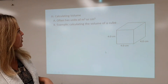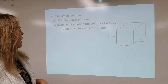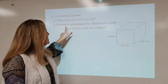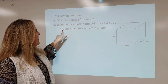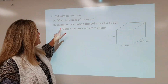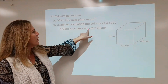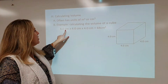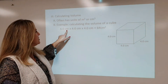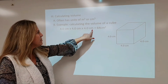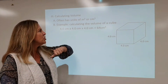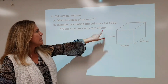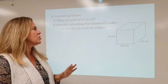So calculating the volume of a cube, if you measure in centimeters — taking that volume as length times width times height — it's four times four times four, which is 64. But don't forget you also have to multiply the units. Centimeters times centimeters times centimeters would be centimeters cubed. So the volume of this cube in centimeters is 64 centimeters cubed.